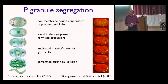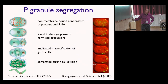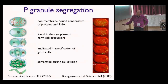P granules are non-membrane-bound condensates of proteins and RNA, found in the cytoplasm of all germ cell precursors. The egg itself is a germ cell precursor. Starting from the egg with P granules, they segregate to one side, we get asymmetric division, and one cell has the P granules. With each successive round of divisions, only one cell retains them, until finally they are found only in the germ cells of the organism — segregated correctly in all these asymmetric divisions and implicated in germ cell specification.